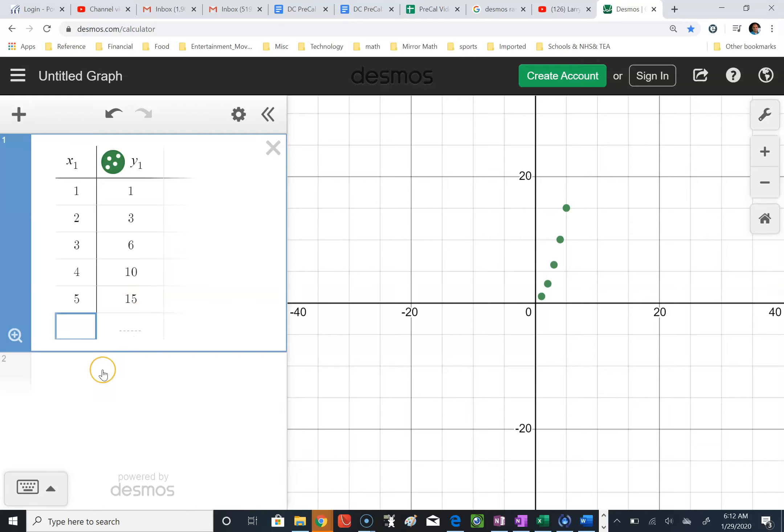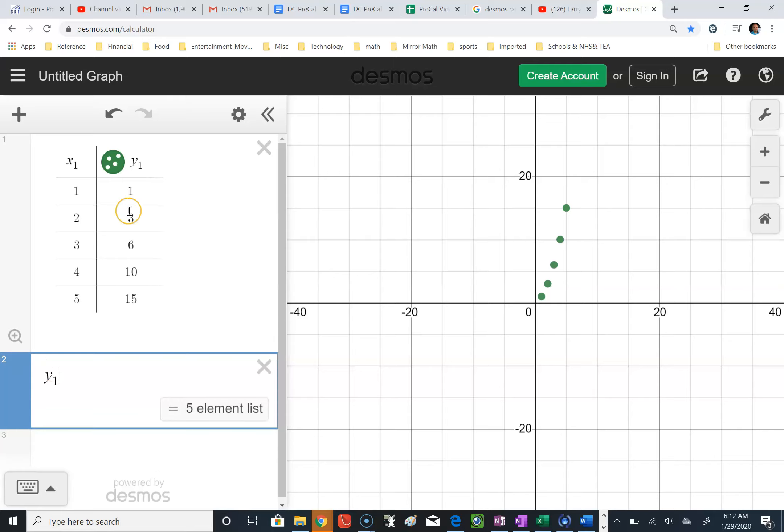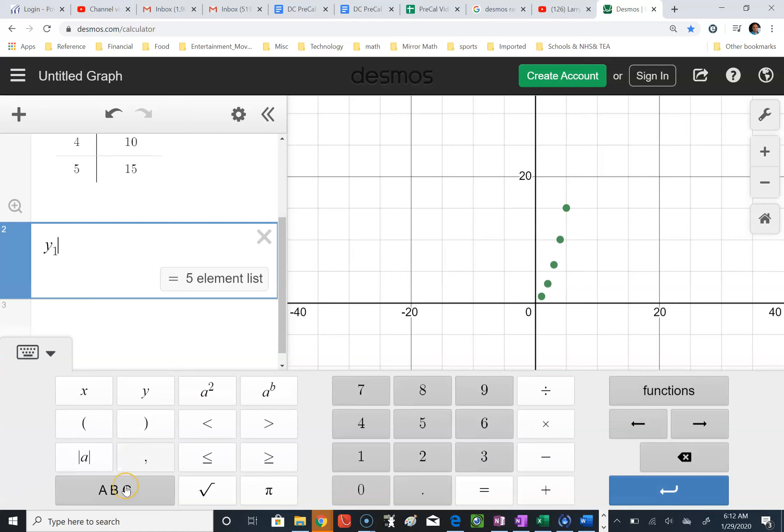After entering your data, go to cell 2. Start with y1, y sub 1. That'll reference the y data that you just entered in. Then click on the keyboard, and then abc, the bottom left,